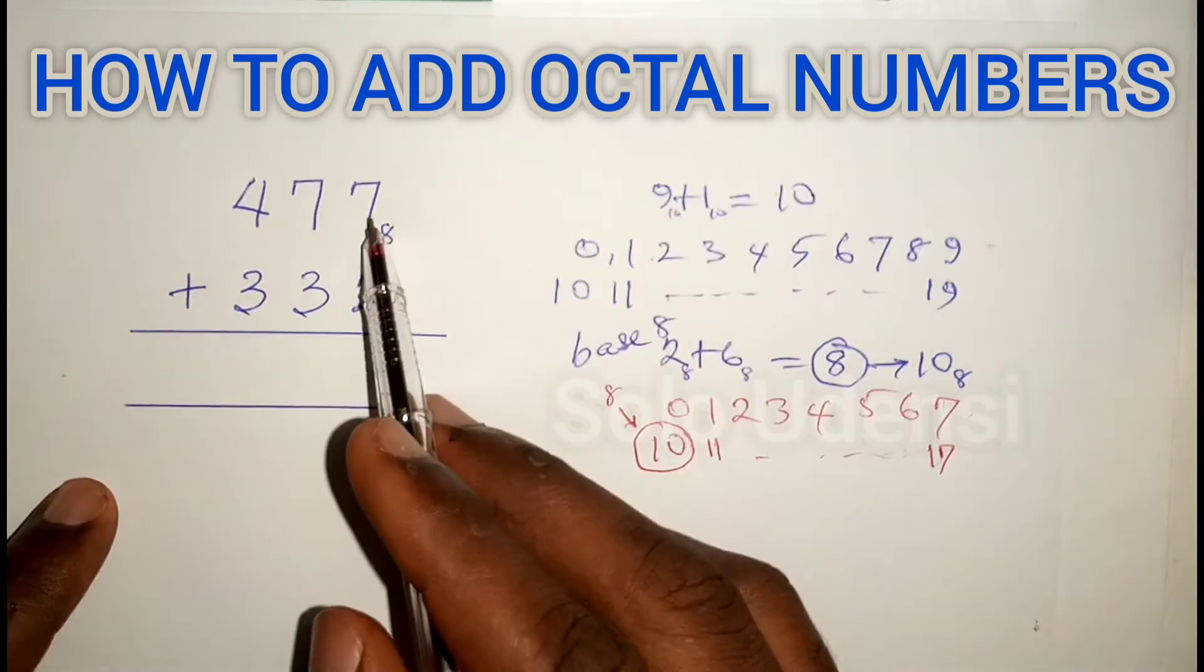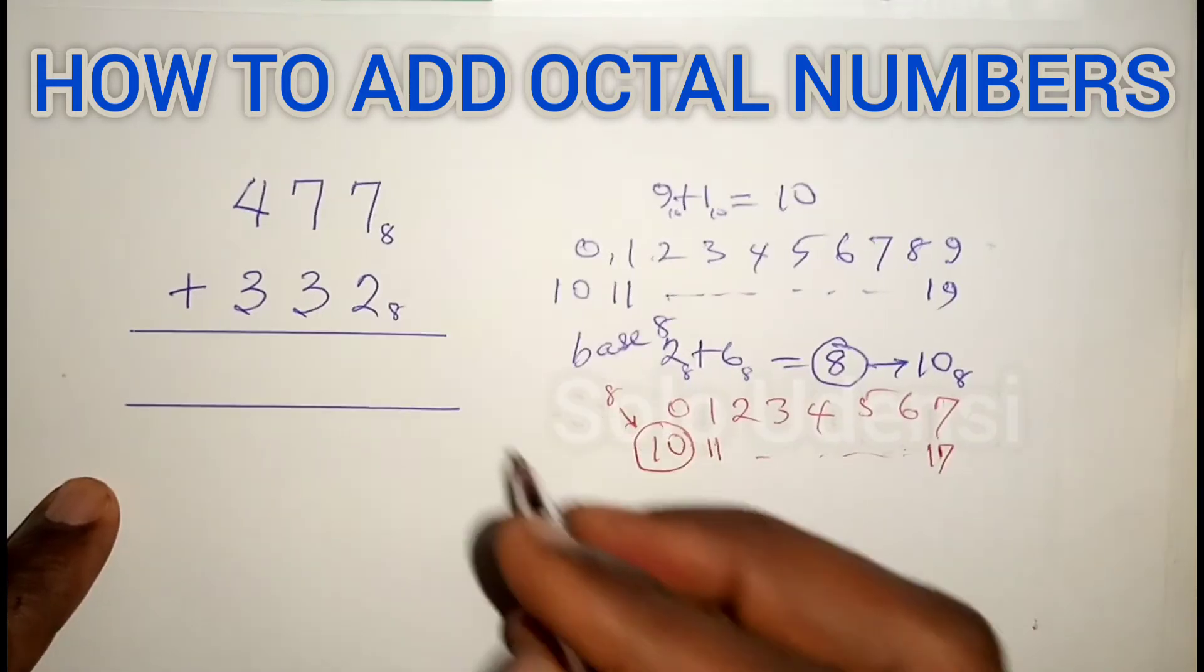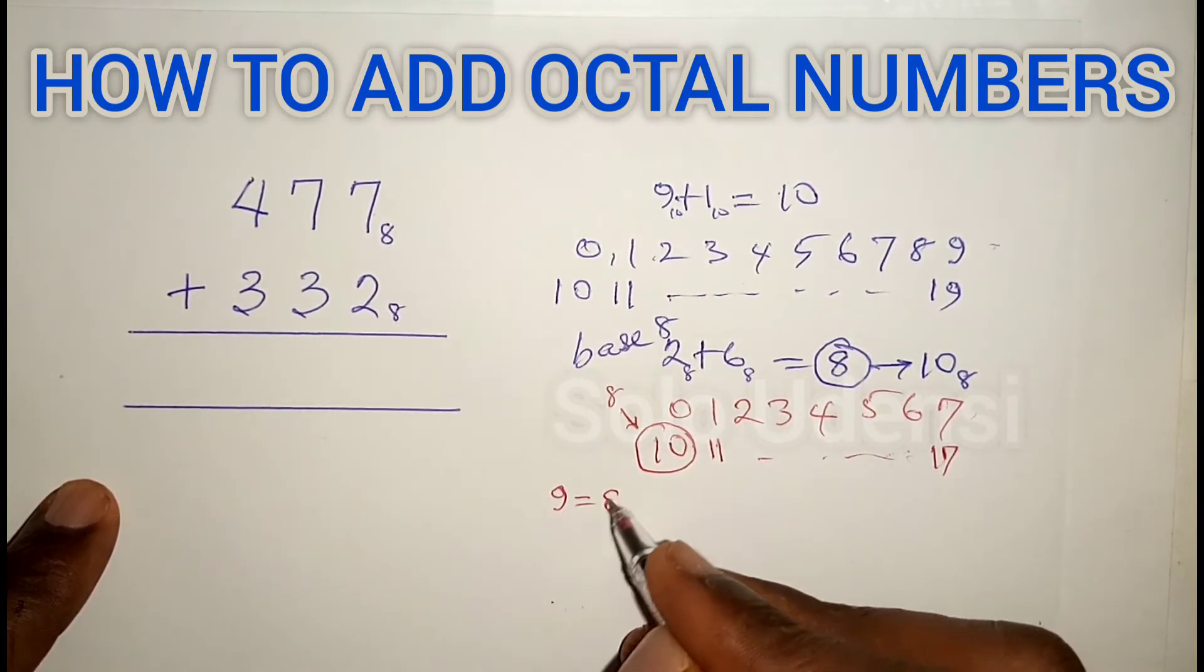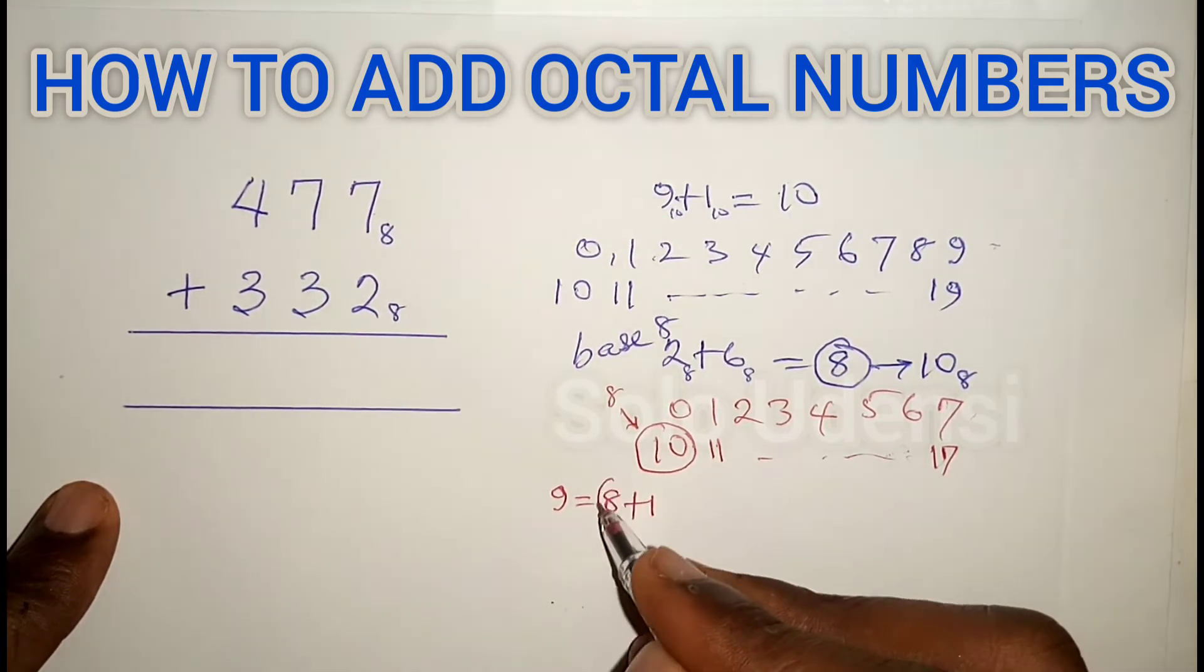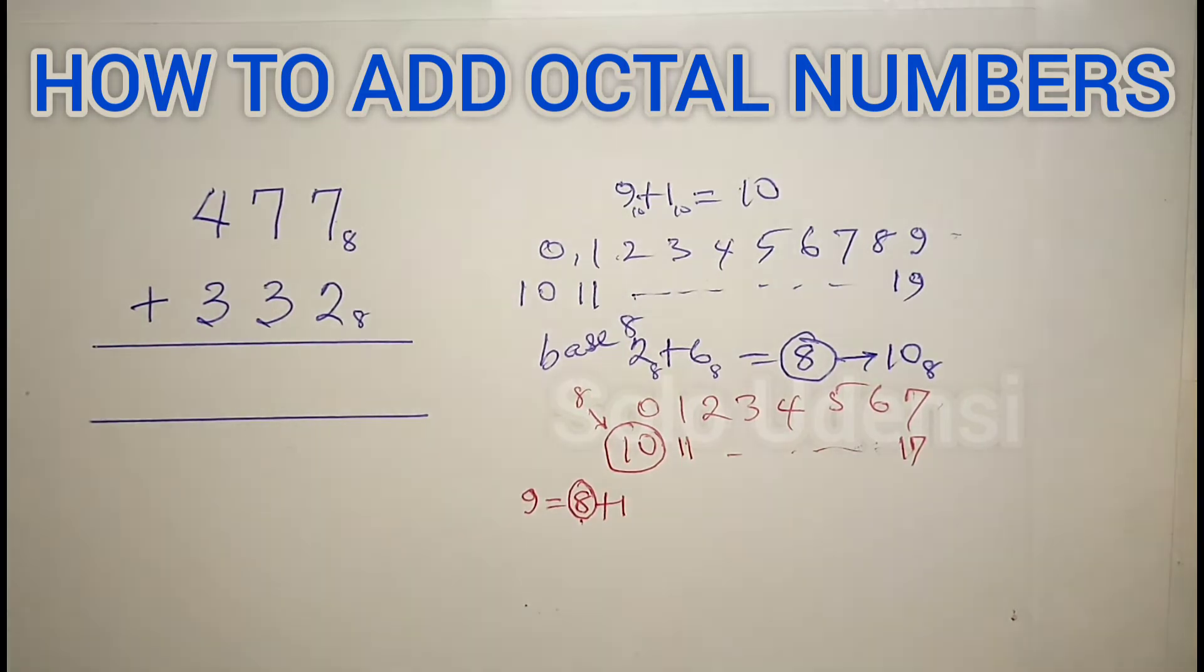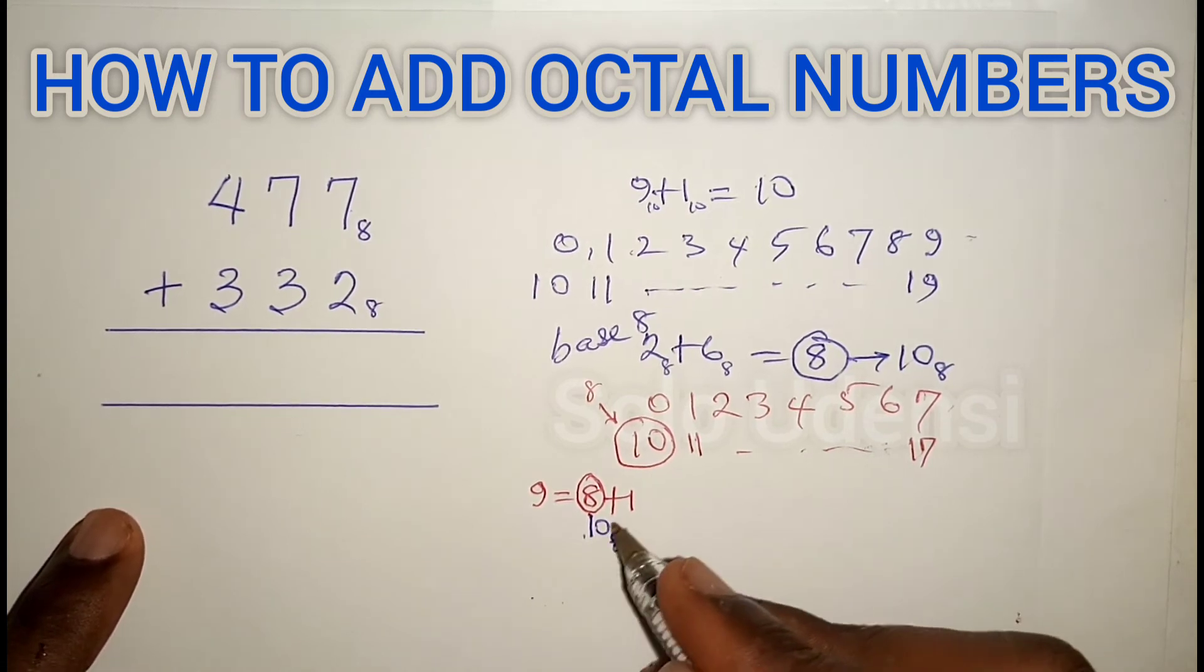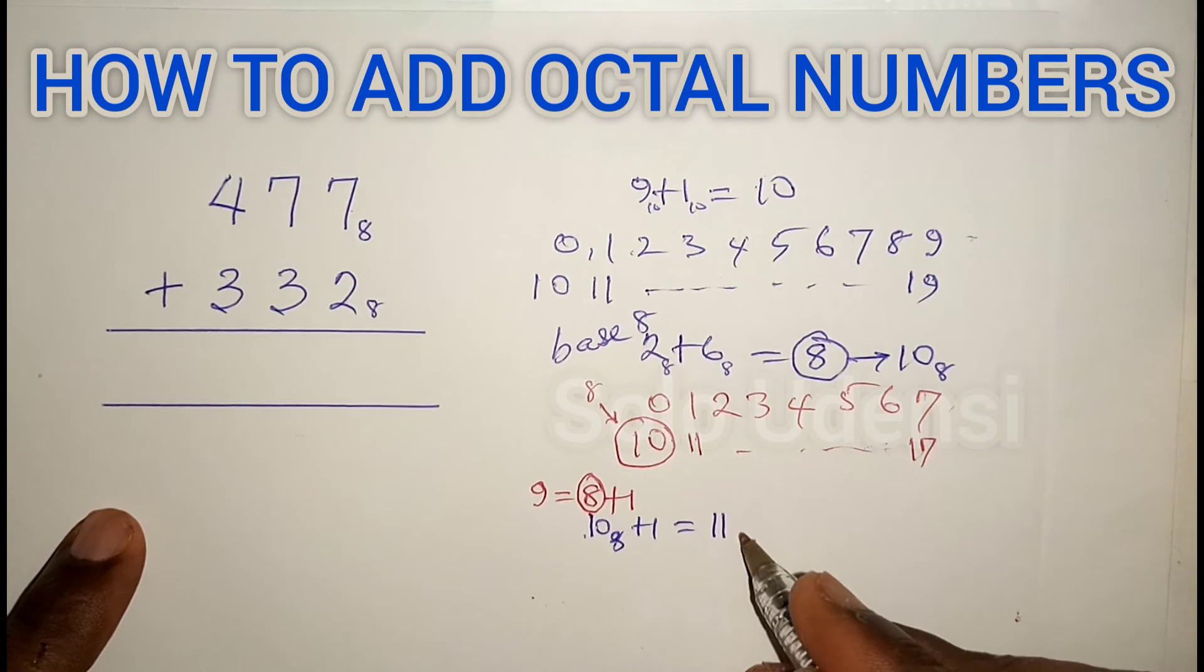Now for this problem, 7 plus 2 gives us 9. And 9 equals 8 plus 1. Because we have seen that 8 plus 1 equals 10 in base 8, if you add 1 plus 1, we have 11 in base 8.